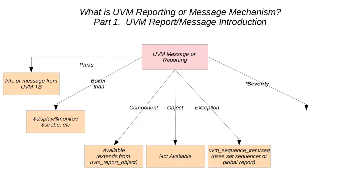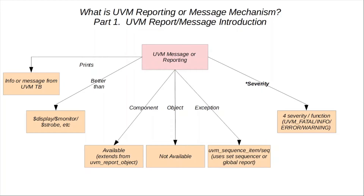Next we are going to discuss severity levels. In short, there are four main levels or functions that can be used to report messages and perform certain actions as a response to these messages. The four severity levels are UVM error, fatal, info, and warning.